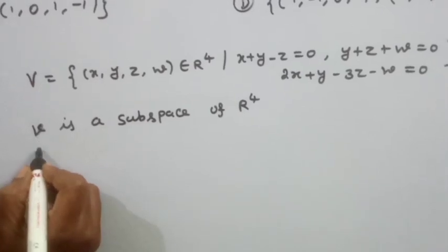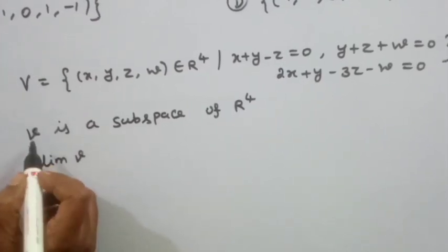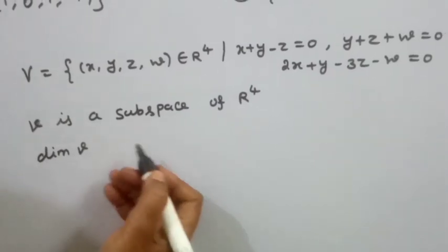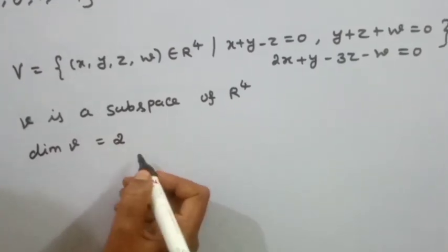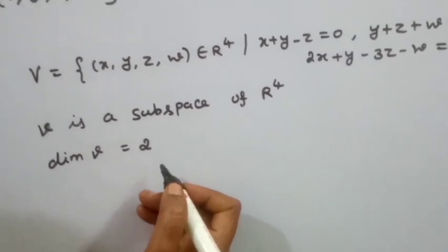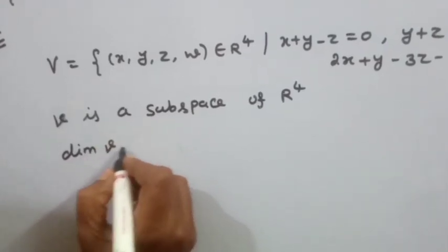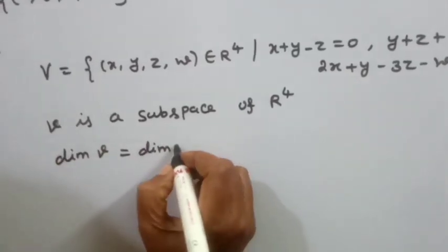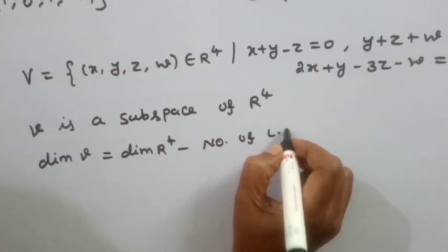To find the basis, we first calculate the dimension of V. The dimension of subspace V equals the dimension of R4 minus the number of linearly independent restrictions.